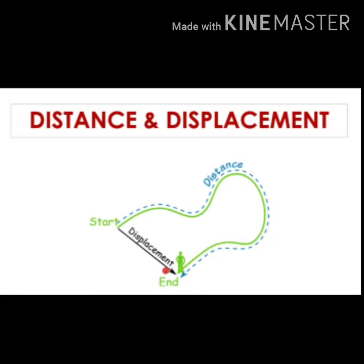The green color line represents distance and the black color line represents displacement. Distance is the total path covered between two points. Displacement is the shortest path from point A to point B with a specified direction. In displacement, your direction is constant throughout the path.